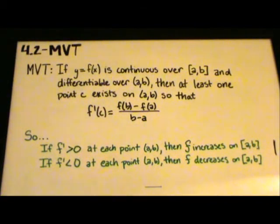When applying the MVT to a graph, if f' is greater than zero at each point on [a,b], then f is said to be increasing on that closed interval. Also, if f' is less than zero at each point, then f is said to be decreasing on the closed interval. So, what does this mean?